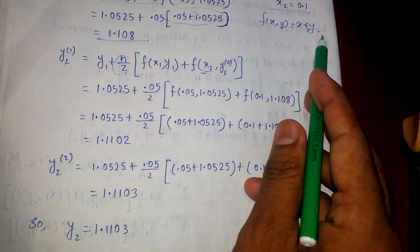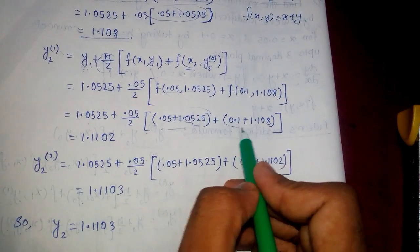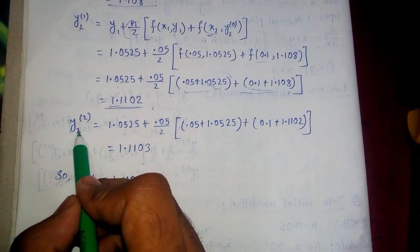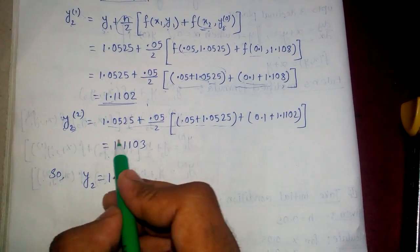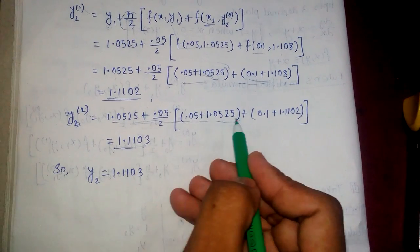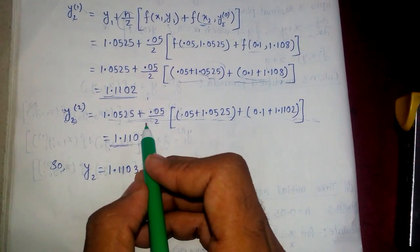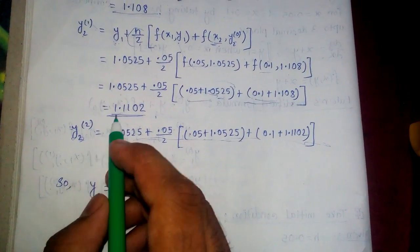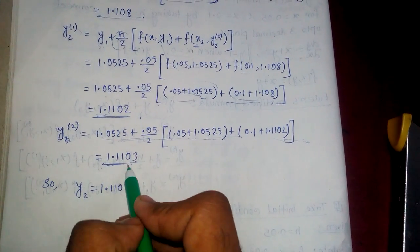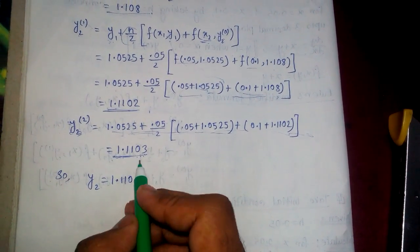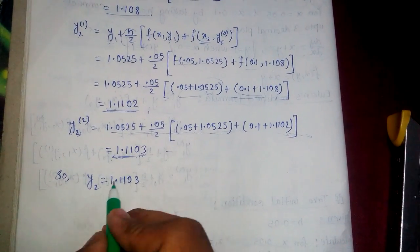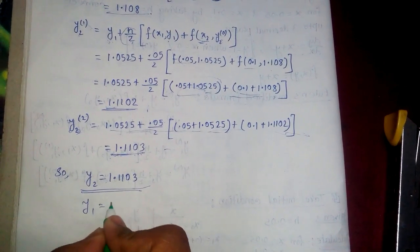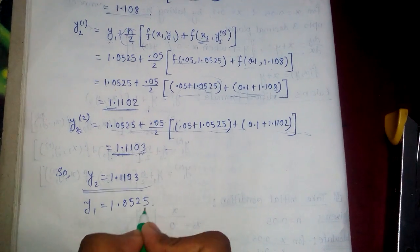We calculate f(x2, y2⁰) using x plus y with x2 equals 0.1 and y2⁰. Then we calculate y2² using y2¹. We can see that y2¹ and y2² both give 1.110 up to three decimal places — they are similar. So we stop the iteration and take y2 equals 1.110. Our final answers are: y1 equals 1.0525 at x equals 0.05, and y2 equals 1.110 at x equals 0.1.